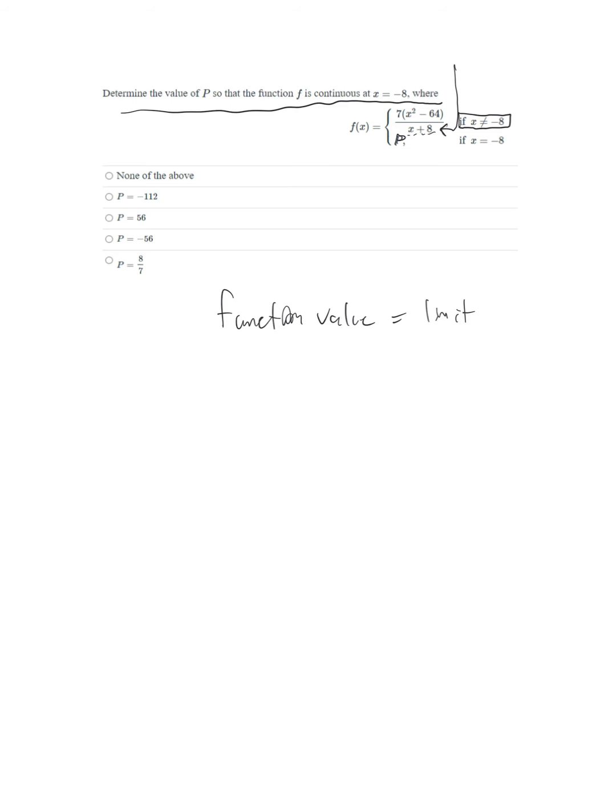Now, a function is continuous if the function value is equal to the limit at any given point. So, what that means is that we need to take the limit as x approaches negative 8 of this guy, of f of x. And that will actually give us the value for p. So, we're looking at this. And typically, we want to go ahead and try to factor, if we can. 7 times x minus 8 times x plus 8 divided by x plus 8. Oh, and notice that these x plus 8s will cancel. So, this will be equal to the limit as x approaches negative 8 to 7x minus 8. And that is going to be equal to 7 times negative 16, which I think is negative 112.